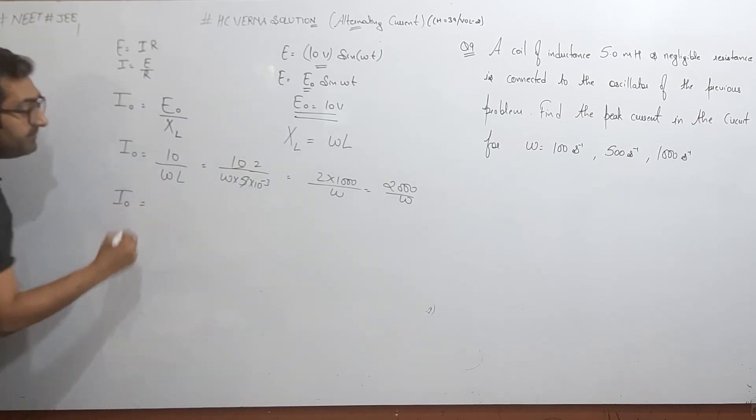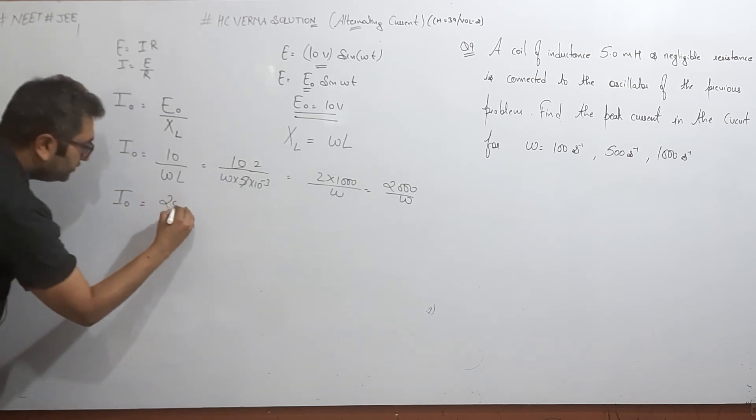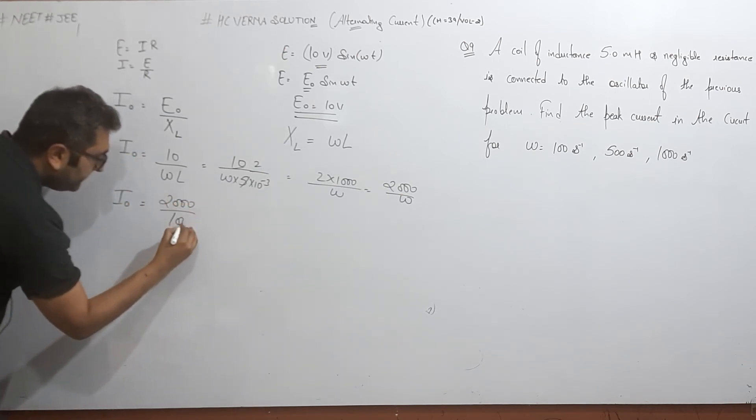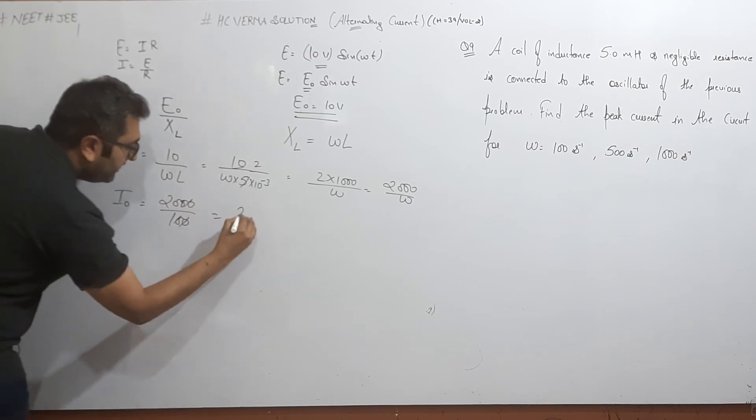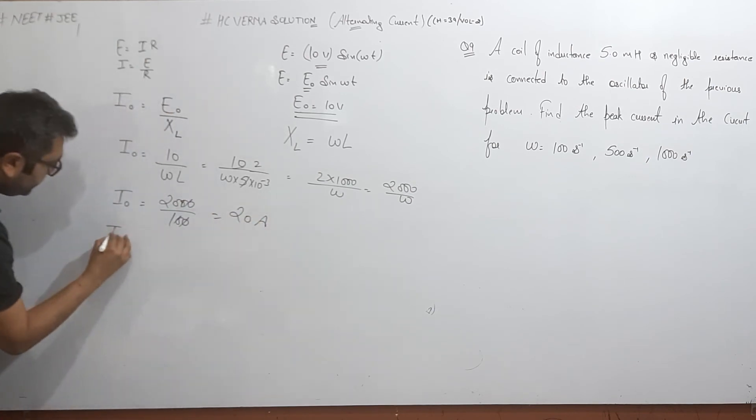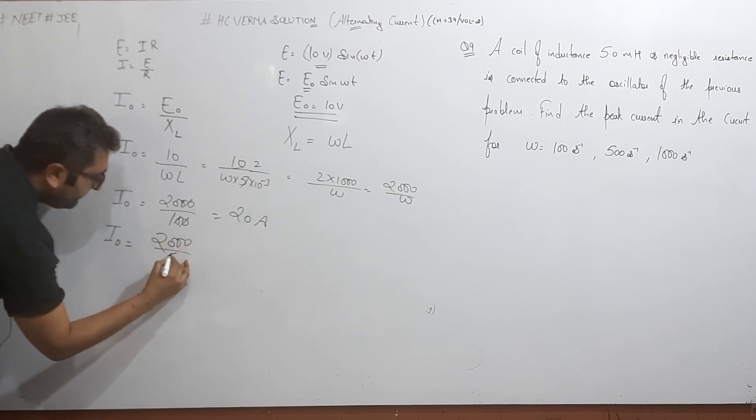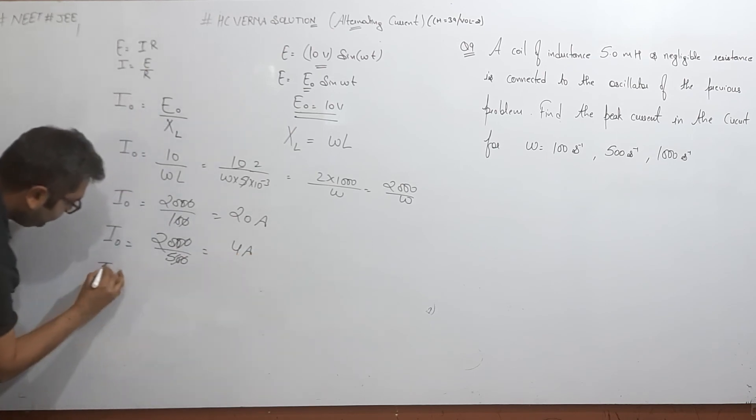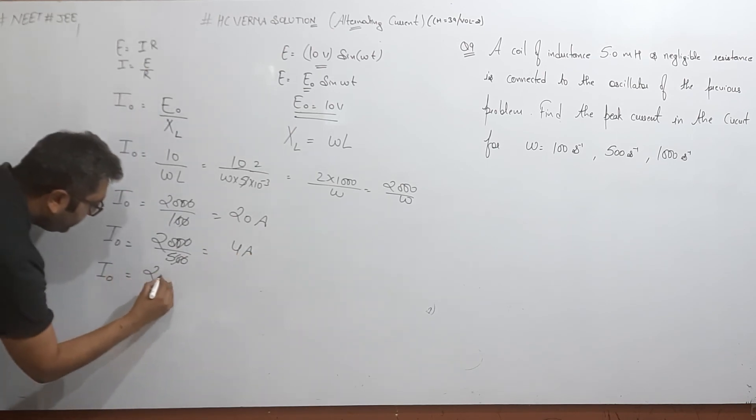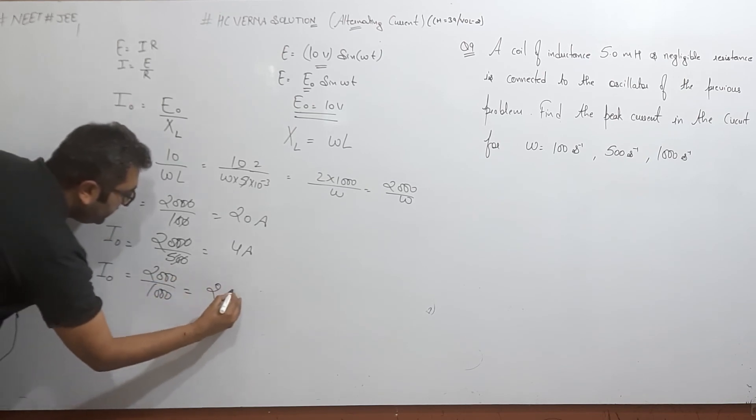I not, when omega is 100, 2000 by 100, that will be 20 ampere. Next one, 500: 2000 divided by 500, that will be 4 ampere. And after this we have 1000: 2000 by 1000, which is equal to 2 ampere.